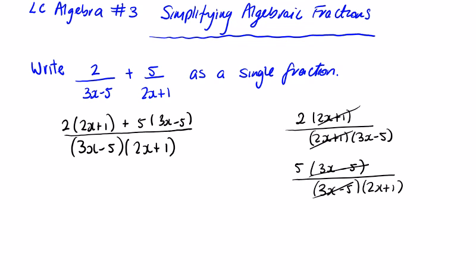Make sure that when you're simplifying these, you know that you can separate these two fractions into individual ones, and that you don't want to change their value. So we just multiply out the brackets now — back to basic algebra: 2 by 2x is 4x plus 2, plus 5 by 3x, which is 15x minus 25.